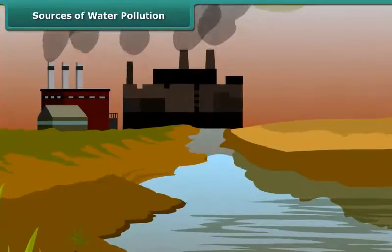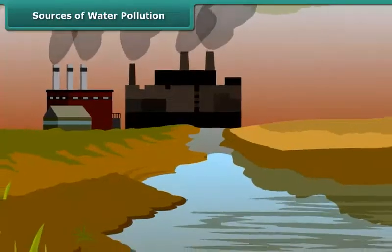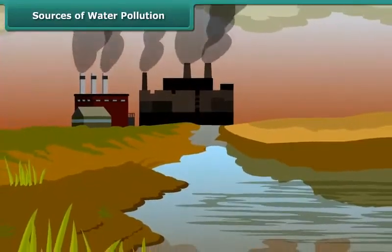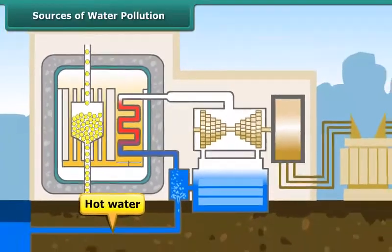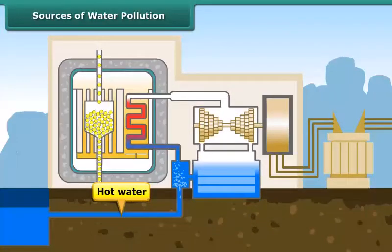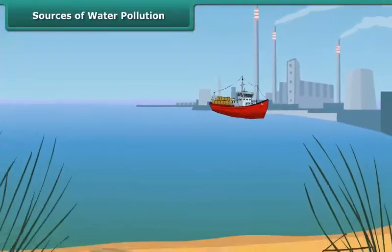Chemicals released from industries like arsenic, lead, and fluorides lead to toxicity in plants and animals. Often factories and power plants use water to cool their machinery and then release hot water, which heats up the water body and causes aquatic animals to die.